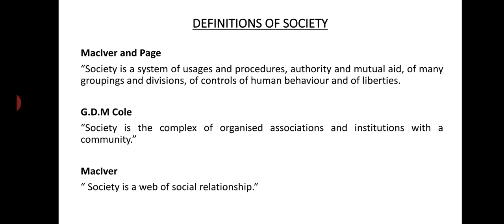Let us analyze these definitions. The simplest definition is given by MacIver, who calls society a web of social relationships — just as a spider with its own web, society is compared to the spider's web. The web here consists of different social relationships between human beings.